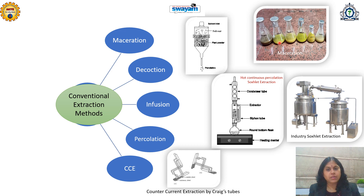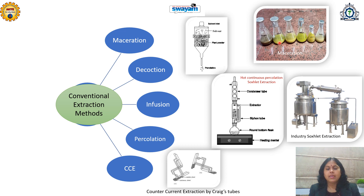Decoction is restricted to the solvent water and literally involves boiling of the plant material in water. Since water is polar in nature, most chemical constituents extracted by decoction are only polar. Infusion uses warm solvents at about 40-50°C — not exactly boiling. Infusions are generally utilized in aromatherapy and similar applications.